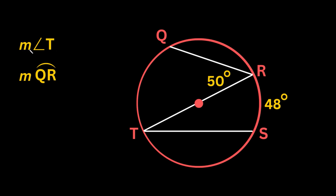First let's find the measure of angle T. That angle is right here at T. This is an inscribed angle, and the reason we know that is because the vertex of this angle is on the circle. Similarly, angle R is also an inscribed angle because the vertex of the angle is on the circle.